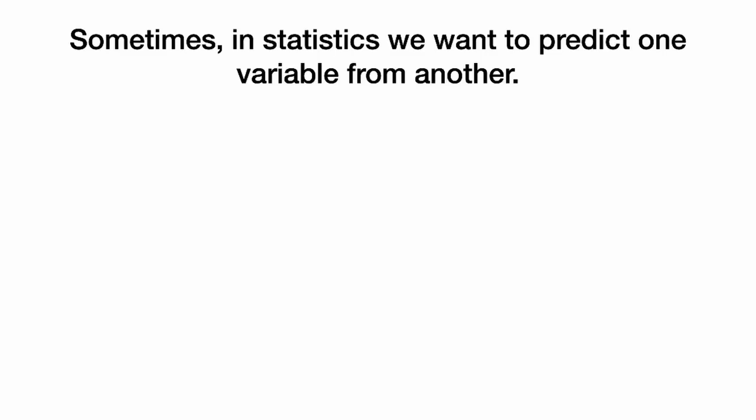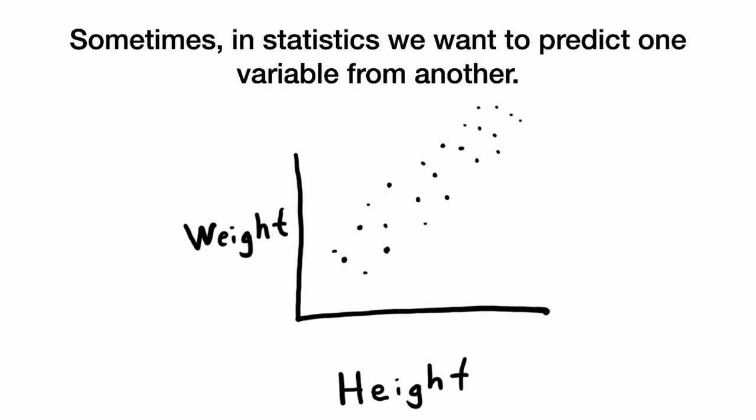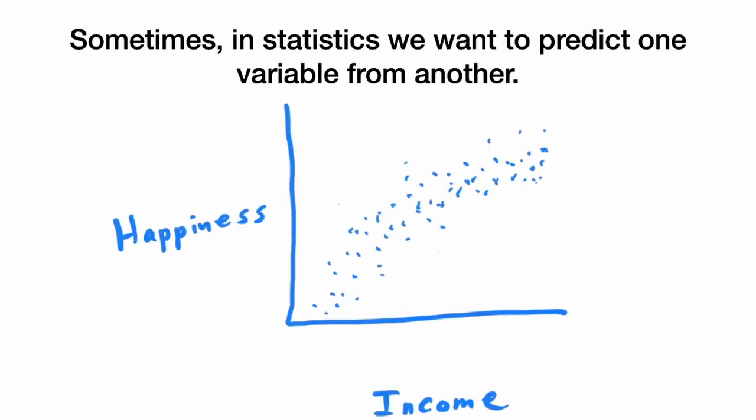Sometimes in statistics, we want to predict one variable from another. For instance, we might want to predict weight from height, or we might want to predict happiness from income.